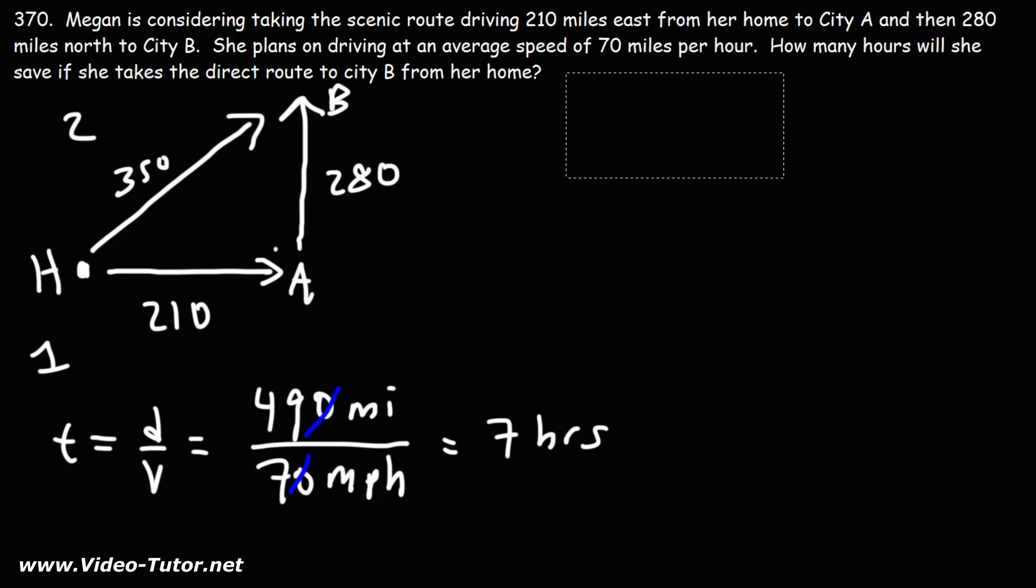If you didn't see that, you can always use the Pythagorean theorem. Let's say this is A, this is B, and we're trying to find C. A squared plus B squared equals C squared. A is 210, B is 280. We want to find the hypotenuse, the side across the right angle, or the longest side, which is C.